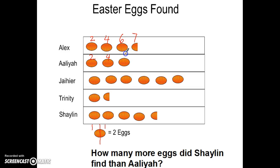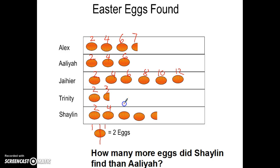2, 4, 6 for Aaliyah. 2, 4, 6, 8, 10, 12 there. 2 plus 1 more is going to give me 3. Then 2, 4, 6, 8, plus 1 is going to give me 9.